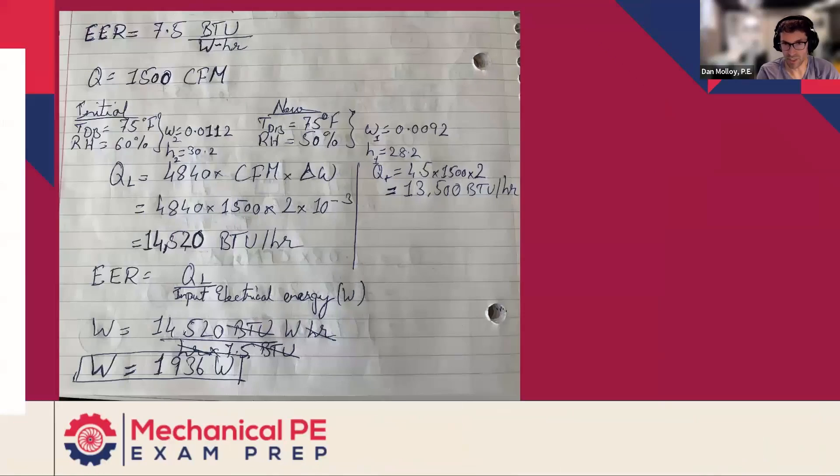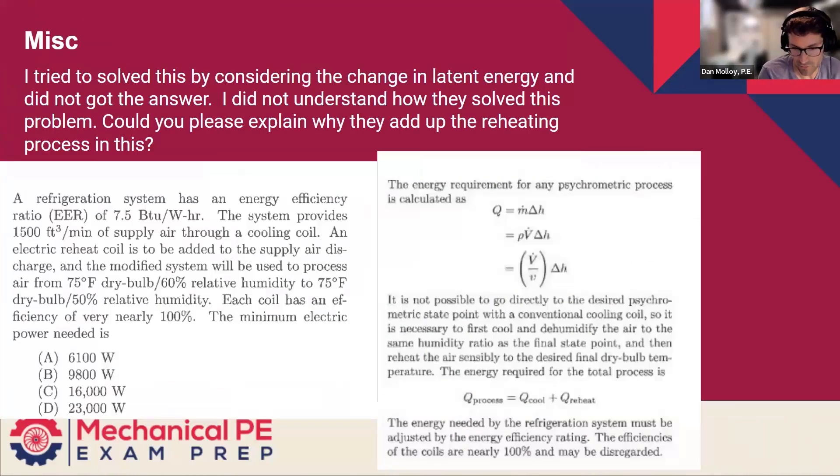So this is a long solution, but it's not actually that hard of a concept. We can cover it pretty quickly. So refrigeration system has an energy efficiency EER of 7.5 BTU per watt hour. The system provides 1500 CFM of supply air through a cooling coil. An electric reheat coil is to be added to the supply air discharge, and the modified system will be used to process air from 75 dry bulb 60% RH to 75 dry bulb 50% RH. Each coil has an efficiency of very nearly 100%. The minimum electric power needed is what?